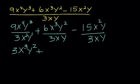6 divided by 3 is 2. X to the 3rd minus x to the 1st is x squared. And y squared minus y to the 1st is just y to the 1st, or y, we don't have to write the 1. Keep the minus sign.